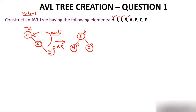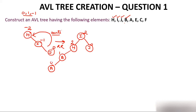B is smaller than I, so it goes left. B is smaller than H, so it comes to the left of H. Calculate balance factors: I has balance factor 1, H has balance factor 1, B has 0, J has 0. The tree is still an AVL tree after inserting B. Now insert A. A is smaller than all nodes and comes to the left of B. Calculate balance factors: I has 2, H has 2.